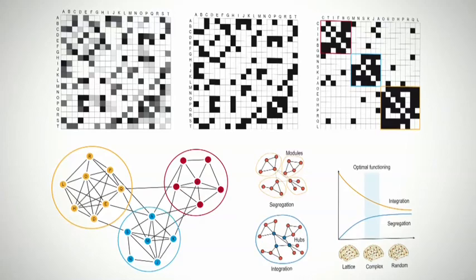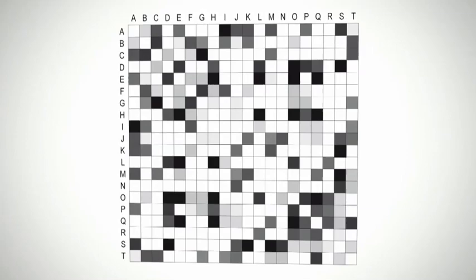Graph theory can be used to characterize a brain network. The connections can be represented with the matrix of the connection strength and binarized at a given threshold.